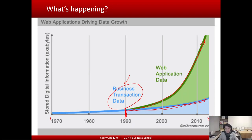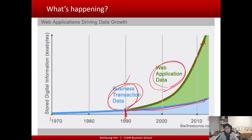Think about how many times you withdraw money from your bank account every day — not much, maybe none. But how many times do you use Instagram, Facebook, or WeChat today? Probably a lot — you sent messages, watched YouTube, multiple times a day. Business transaction data is much less frequent compared to web application data, and the rate of increase of web application data is exponential. That's where big data comes from.